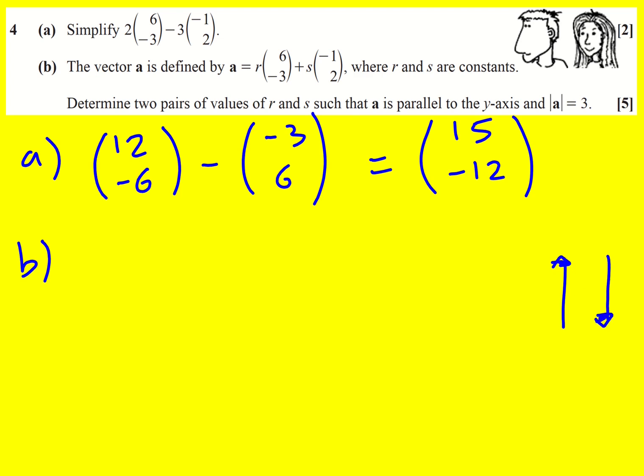In both cases, we can see there's no x component. So we can set the x component equal to 0. 6r minus s must equal 0. And therefore, s equals 6r.